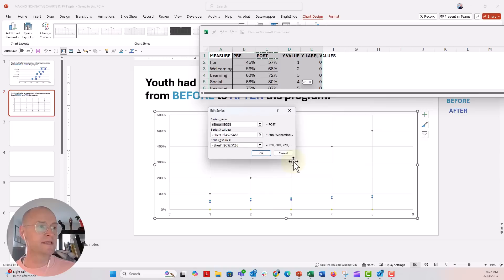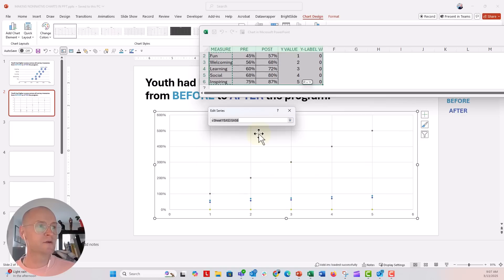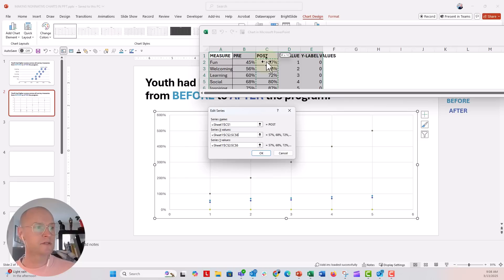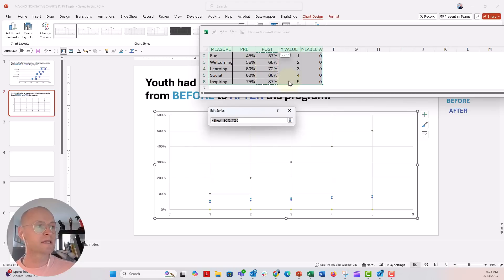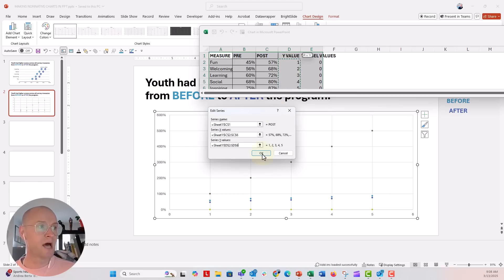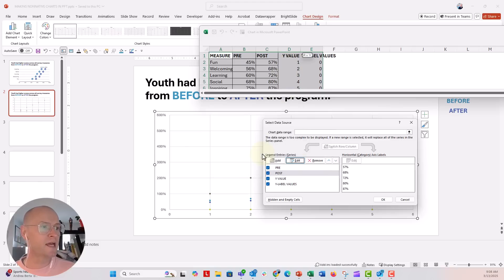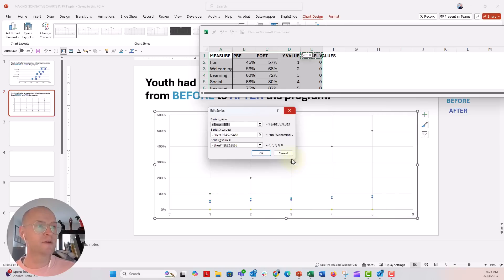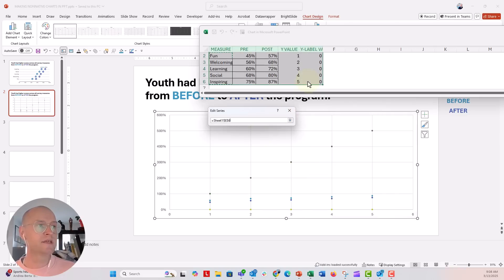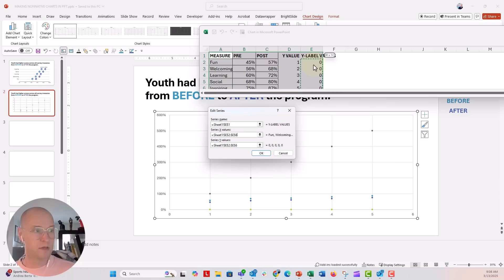For the posts, we're going to do the same thing. We'll make sure the data are selected for X values. For Y values, we're going to select the same Y column. This is a two series dot plot. I'm going to click OK. My Y values series was in there because I pasted it, but we can remove that. And my Y labels, I'm going to edit these too. X value is going to be the zeros.